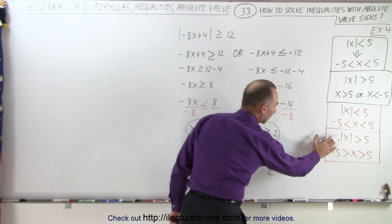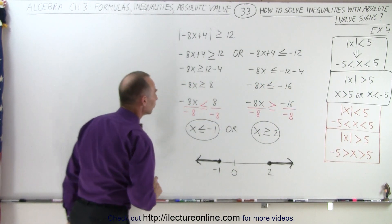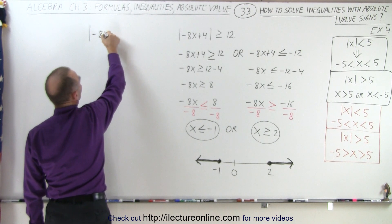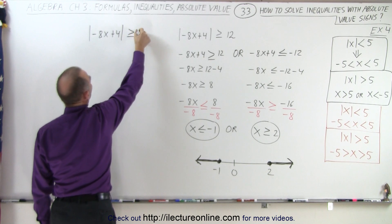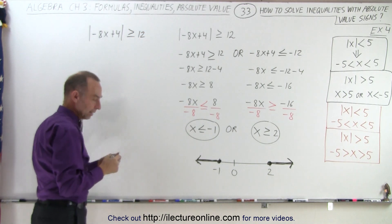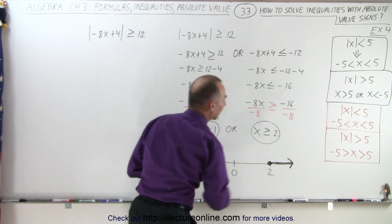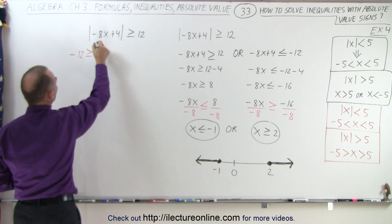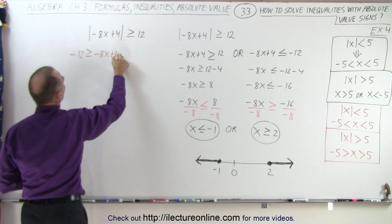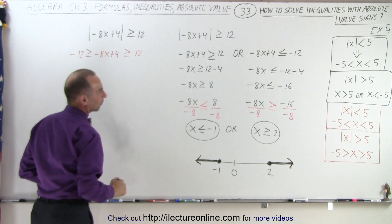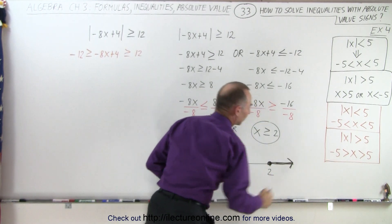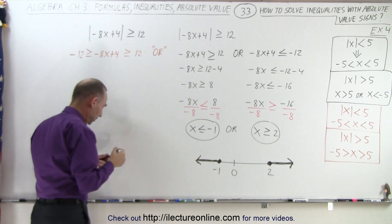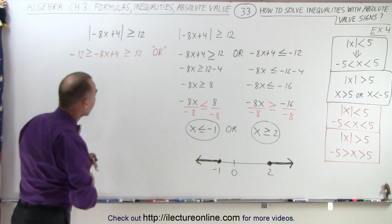Can we do it like this? Certainly we can, as long as we realize that's an or condition. So we're going to write the absolute value of minus 8x plus 4 is greater than or equal to 12. And then we're going to write it like that: negative 12 is greater than or equal to minus 8x plus 4, which is greater than or equal to positive 12. Now remember that this is an or condition, because you can't possibly have this happening at the same time. So now we continue.